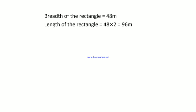We had to find the area of the rectangle. The area of a rectangle equals length × breadth, that is 96 × 48 = 4,608 m².